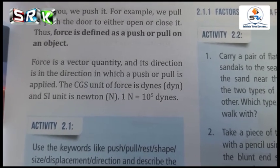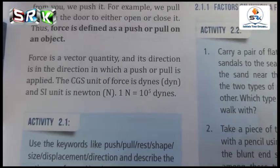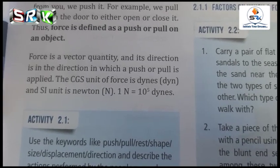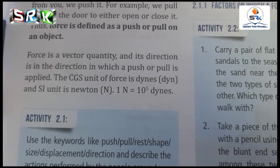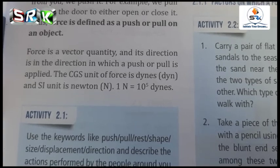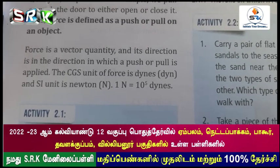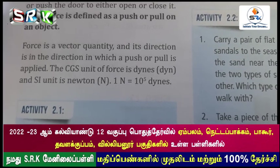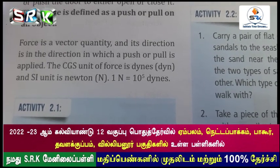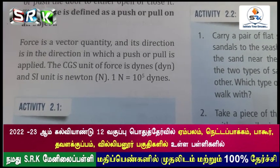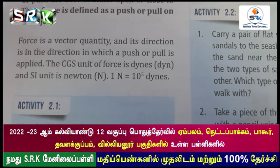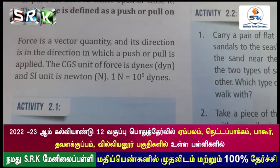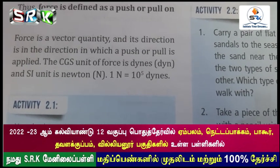For example, we pull or push a door to either open or close it. Thus, force is defined as a push or a pull on an object. Force is a vector quantity, and its direction is in the direction in which the push or pull is applied. The CGS unit of force is dynes and the SI unit is newton.